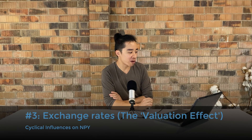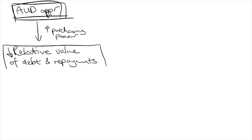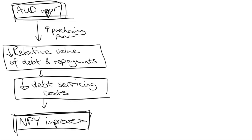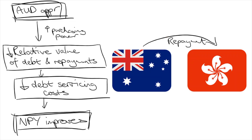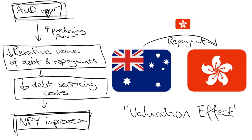The last cyclical factor I want to cover is the influence of the exchange rate on NPY. Theoretically, as Australia's exchange rate appreciates, it means that we would have more purchasing power and the relative cost of servicing liabilities would decrease. For example, imagine if we owe a loan to Hong Kong and it requires us to pay a hundred Hong Kong dollars every month. If this month the Australian dollar appreciates, it means that the hundred dollar interest now appears cheaper to us. This change in relative value of debt servicing costs is called the valuation effect.